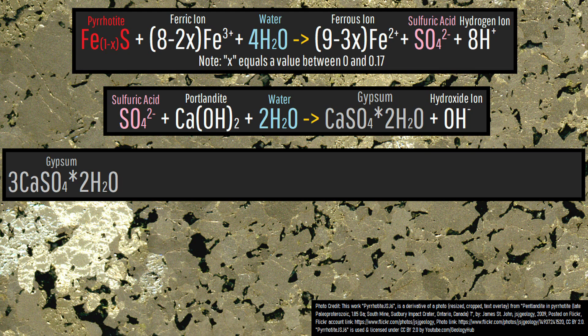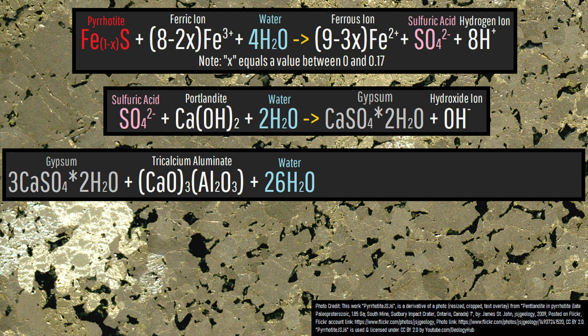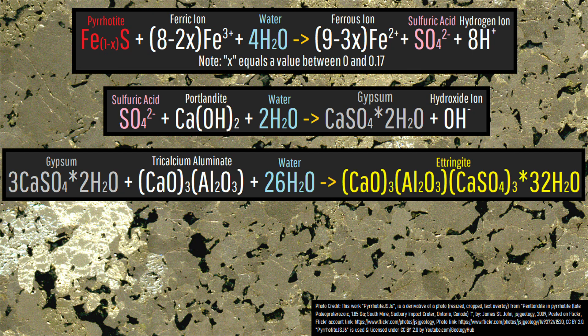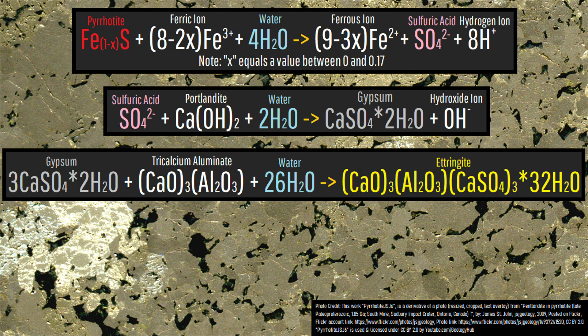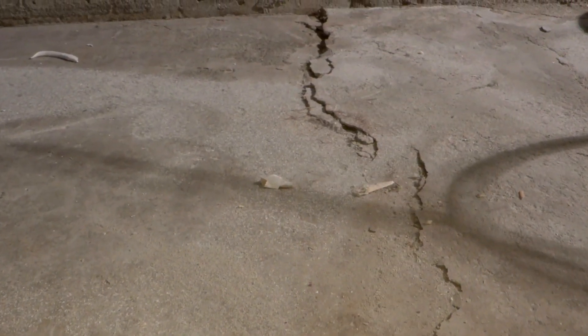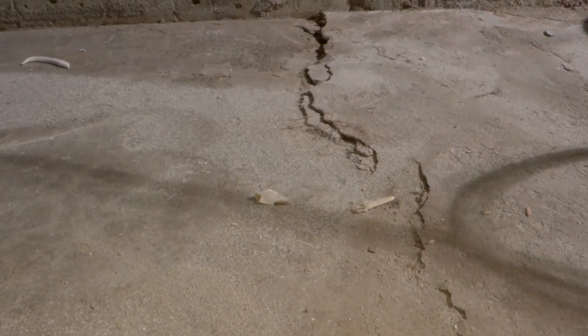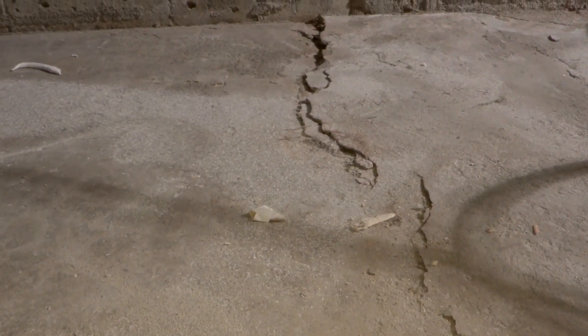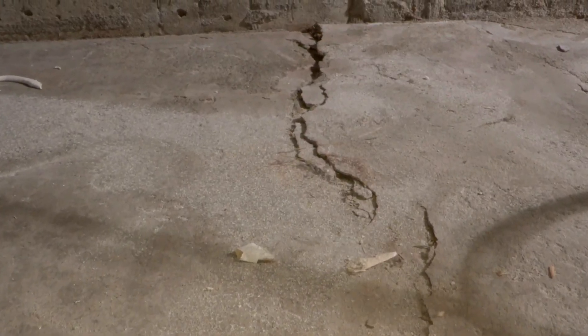The opposite then became the problem, as the gypsum once again combined with water and calcium aluminate to form the mineral ettringite. Ettringite is 23.7% less dense than gypsum, meaning that now the previously contracted concrete will expand, creating abundant structural instability in the concrete.